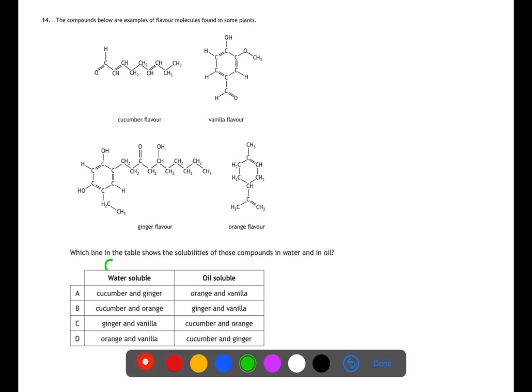Question fourteen is looking at the properties of some molecules — specifically water and oil solubility. For water solubility we're looking for polar groups such as OH groups; for oil solubility, carbon-to-carbon bonds. Vanilla and ginger both contain OH groups and are therefore water soluble, whereas cucumber and orange are oil soluble.